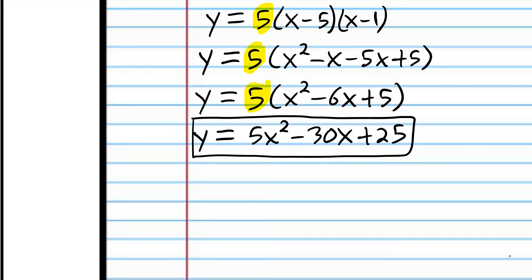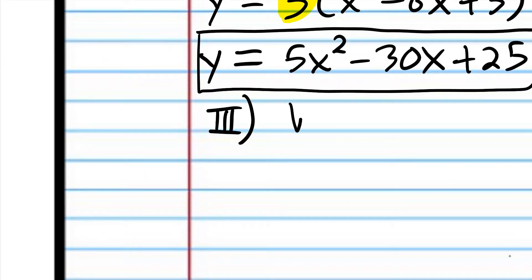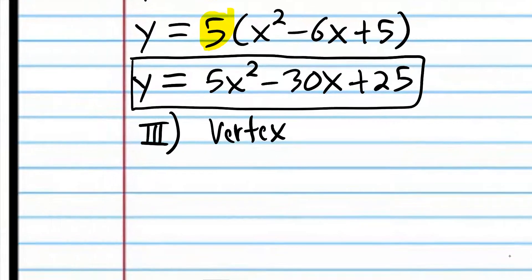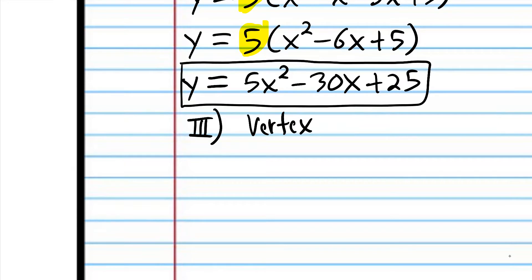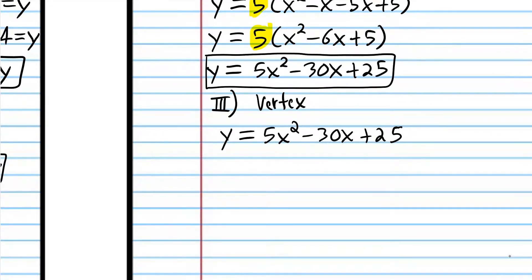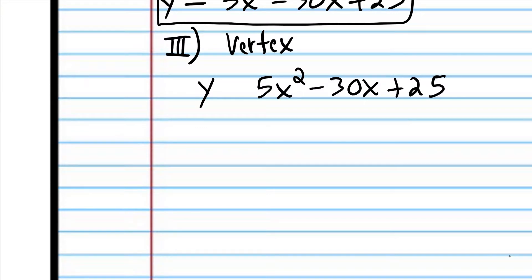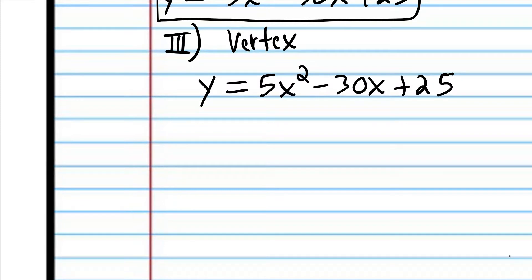Now we're going to convert to vertex form, which takes a little more effort and thought. To convert to vertex form, it's easiest to start with standard form. To convert to vertex form, you have to complete the square. Remember: before you complete the square, you have to get rid of the coefficient on x squared. We cannot complete the square unless we get rid of this coefficient in most cases.